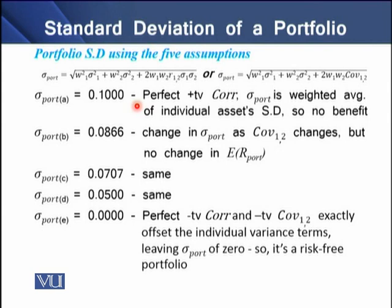For portfolio B, we again have a positive correlation, and there is only a change in the asset's riskiness but no change in expected return. The same interpretation applies for portfolios C and D. For portfolio E, we have perfect negative correlation and negative covariance, so the individual variance terms exactly offset each other, resulting in zero riskiness. Therefore, portfolio E is essentially a risk-free portfolio.